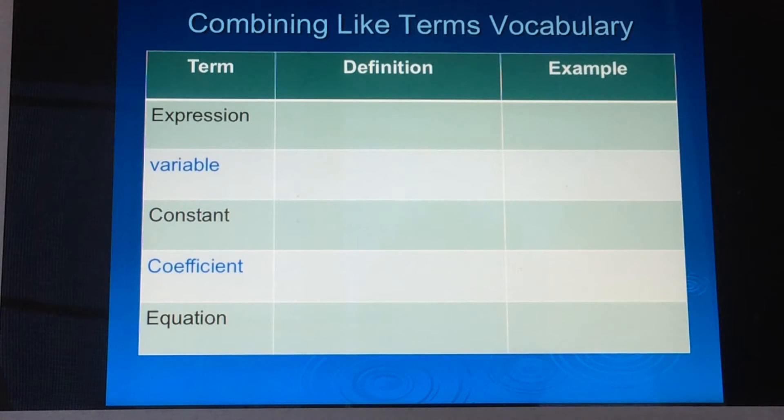Okay, so let's talk about the first term. The first term is expression. An expression is a math phrase using variables, numbers, and addition, subtraction, multiplication, or division signs, as well as parentheses sometimes. An example of an expression is 5x minus 2. We will use the example 5x minus 2 throughout all of these definitions, so you'll be able to see some consistency with what the words mean.